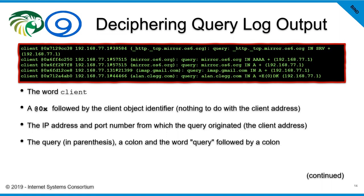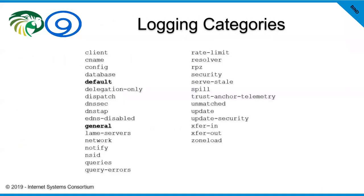A comment from Eugene confirmed that the buffer parameter in the logging channel defaults to false — log messages are flushed immediately, and you have to set it to true if you want them buffered. Someone also asked about the 'spill' category — I really don't have any idea offhand, but it is documented in the ARM; I did read it, my memory just isn't good enough to remember what it was.